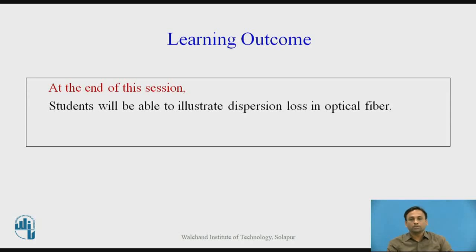Before starting this lecture, recall how many types of losses we have studied in optical fiber. We have studied almost two to three losses which affect the signal while transmitting in the fiber optical cable. The first loss was the absorption loss, which is due to the imperfection of the atomic structure of the fiber materials. In extrinsic absorption, there is a transition of electrons from the lower energy to the higher energy state, causing a loss of signal. In intrinsic absorption, the water molecules affect the signal.